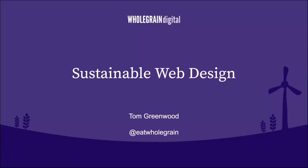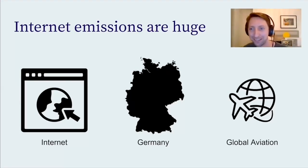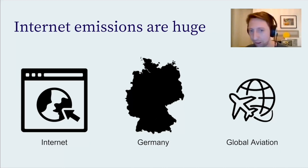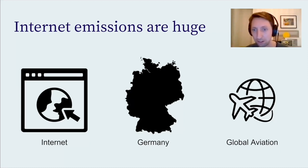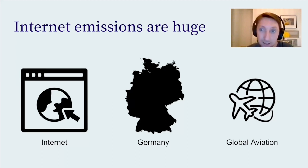I'm going to assume that everybody here knows the general concept that internet emissions are huge. There's a bit of debate around exactly how huge they are, but generally as a ballpark they're roughly equivalent to a country like Germany or the global aviation sector. Whether it's 2%, 3%, or 4% of global carbon emissions, it's a big number and it's something that needs to be tackled if we're going to move towards a sustainable society.